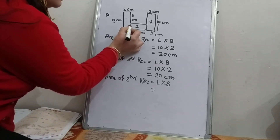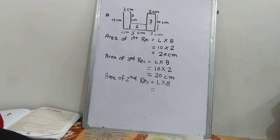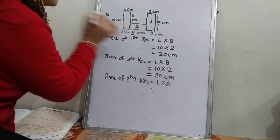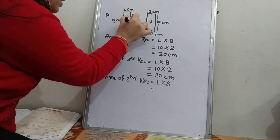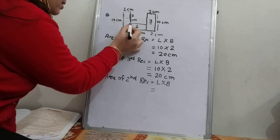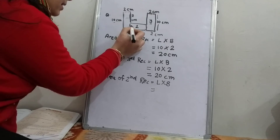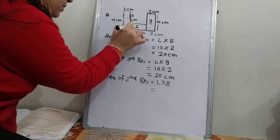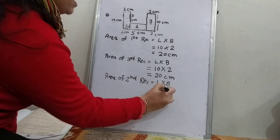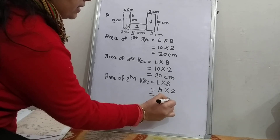Now we have to find what is the breadth. Here it is given that the full side is 10, and up to here is 8, and we need only this part. So 10 minus 8, it will be 2 cm. So now we know the length and breadth. We can multiply: 5 multiplied by 2, it will be 10 cm².